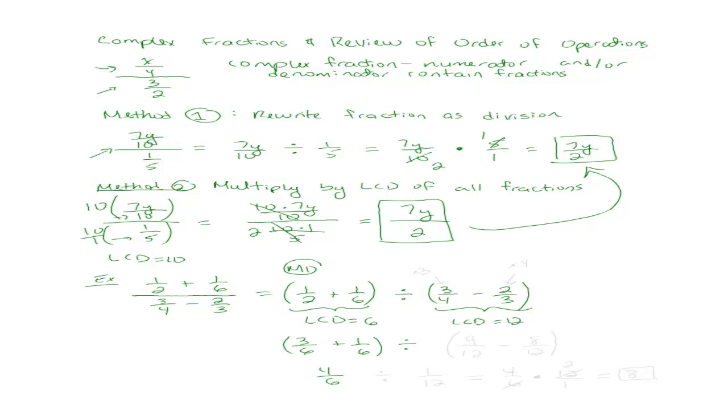What is my LCD so I can subtract these two fractions? 12. So I need to multiply the first fraction by 3 and I need to multiply the second fraction by 4. So the first fraction becomes 9 over 12, and the second fraction becomes 8 over 12. And then what's 9 over 12 minus 8 over 12? 1 over 12.